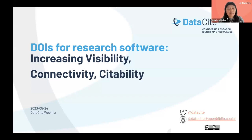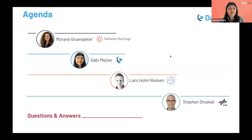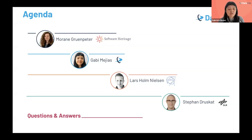Welcome to this webinar about DOIs for research software: increasing visibility, connectivity, and citability. We have a great lineup of speakers. First, we'll hear from Moran Groombetter from Software Heritage. Then I'll give a short presentation on behalf of DataCite. Lars Holm Nielsen from CERN will continue. And last but not least, we'll have Stefan Ruskat from DLR, the German Aerospace Center. Afterwards, we'll have time for questions and answers.